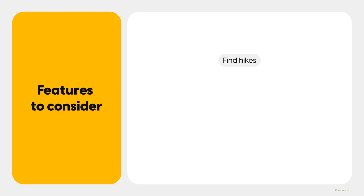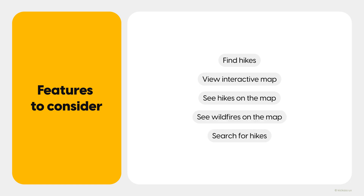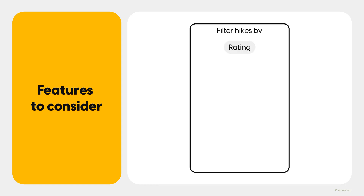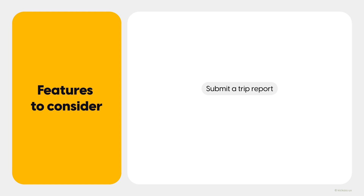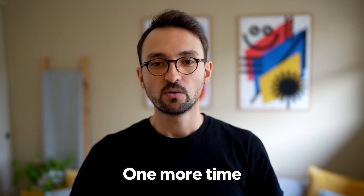Let's now talk about the features to consider. These are examples of solutions that you might or might not consider, depending on where your problem definition takes you: find hikes, view interactive map, see hikes on the map, view wildfires on the map, search for hikes, filter hikes by rating, mileage, elevation gain, trail features (for example, coast, river, waterfalls, etc.), animals allowed, kid-friendly, parking pass (for example, non-required, national park pass, etc.), submit a trip report (meaning the ability to write a hike review, add pictures, rating, etc.), and share a hike (for example, link, text, email, etc.). Just to be clear, we're not saying you have to design for all these use cases — this is just for inspiration and to get your creative juices going.